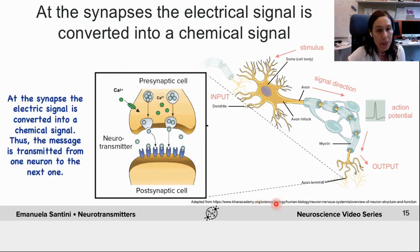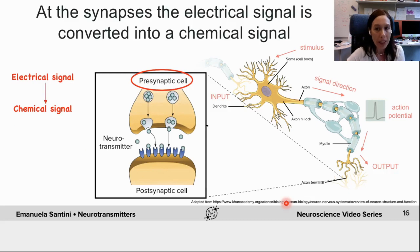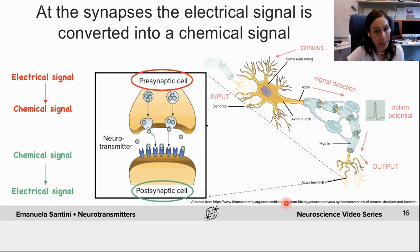Thus, the synapse is the place where electrical signals are transduced into chemical signals and messages are transmitted from one neuron to the other. The presynaptic neuron converts the electrical message into a chemical one, but in order for it to become an action potential again in the receiving or post-synaptic neuron, the message has to be converted back into electrical, and this happens when the neurotransmitter binds to its receptor.